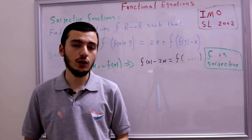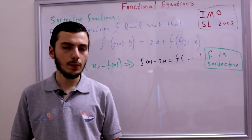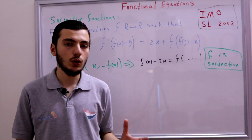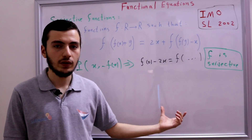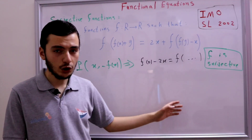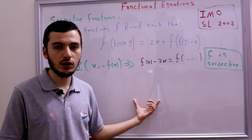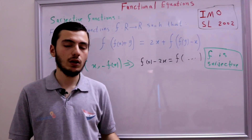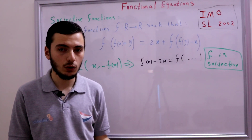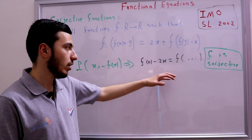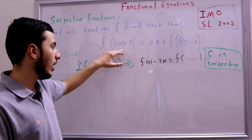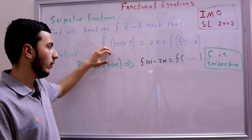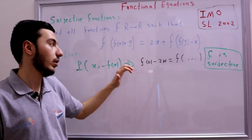Now, how can we use the surjectivity of f to solve the problem? In our last video we discussed a trick: when all the y's in your functional equation are inside f — like f(y), f(y), f(y) — and your function f is surjective, you can consider a variable z, set z = f(y), and since f(y) is surjective, z is any real number. This lets you eliminate all occurrences of f(y). Can we do the same here? We have f(y), which is good, but we also have f(f(x) + y), not just f(y).